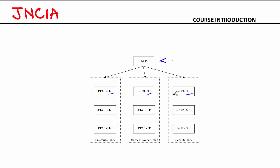Once you complete your JNCIS, you can then dive into JNCIP, which is the professional level certification, and then you can also move into JNCIE, which is the expert level certification. So those are the different tracks for Juniper Certifications.